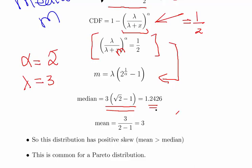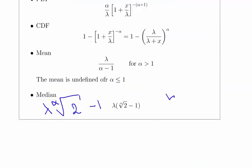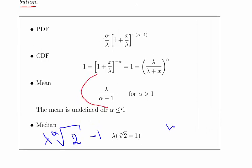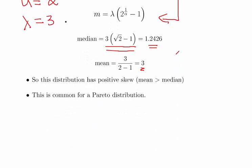Using the expression previously for the mean, which was lambda divided by alpha minus 1, that simply works out to be 3. You can use this expression from the tables, and remember alpha is greater than 1. This is our value for the median, and this is our value for the mean.